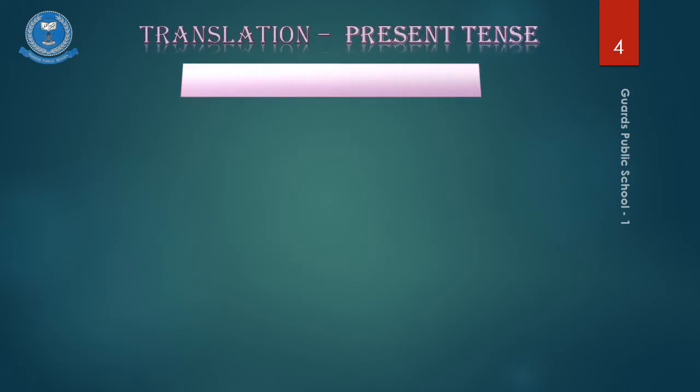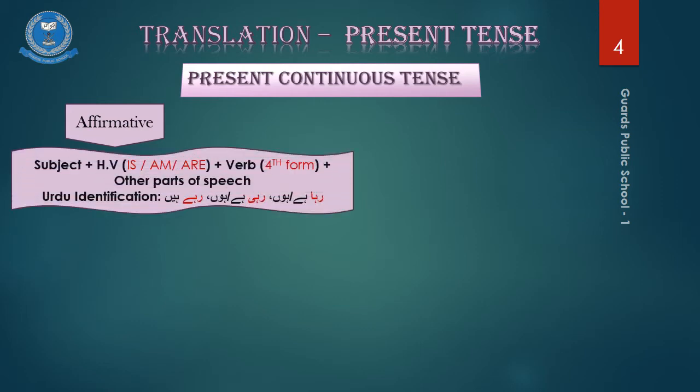For the second aspect, the present continuous tense, we know that in the affirmative form, we have a subject in the beginning, a helping verb is or am or are, verb in its fourth form, the progressive form, which is always used in continuous or the present continuous aspect of the tenses and then the other parts of speech. So the Urdu identification will be raha hai or raha hoon for singular masculine subject, rahi hai or rahi hoon for singular feminine subject, and rahi hai for plural subjects.